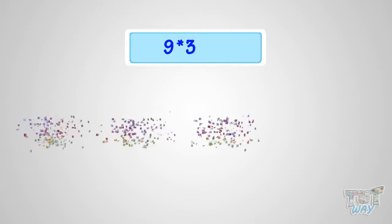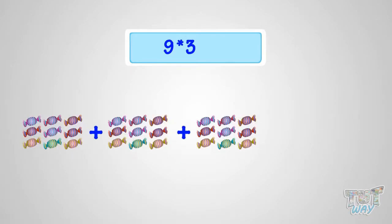What is 9 multiplied with 3? It is same as three sets of 9 candies. So, it is 27 candies. That is, 9 multiplied by 3 is 27.